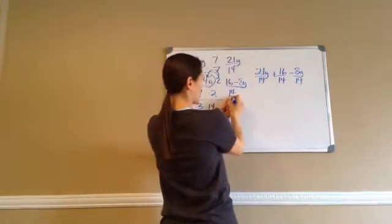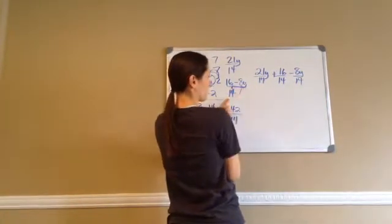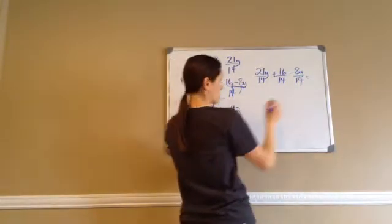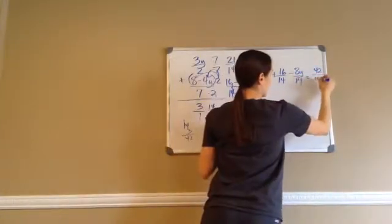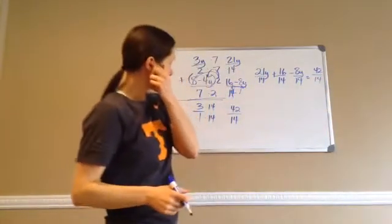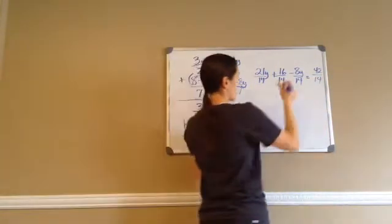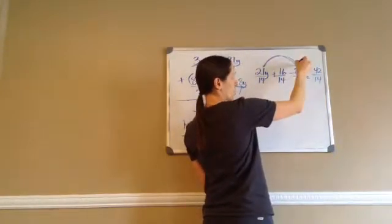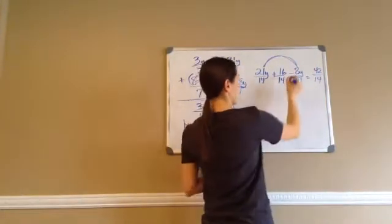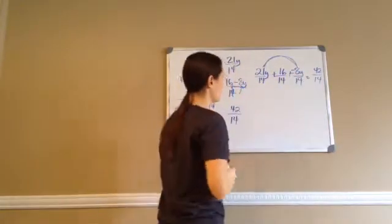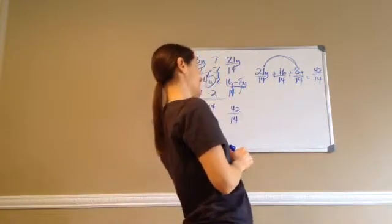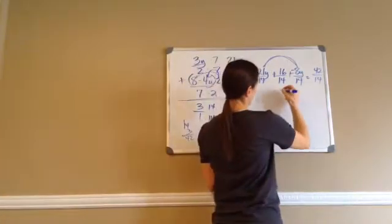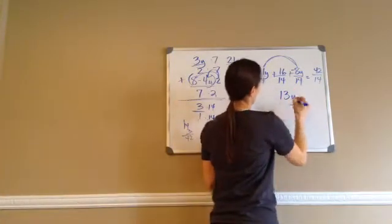I just took that 14 and applied it to both of them. Then equals, and that's 42 over 14. Now you have to see the ones with y's as like terms. Let's make this a plus-negative: 21 plus a negative 8 would be 13. So that's 13y.